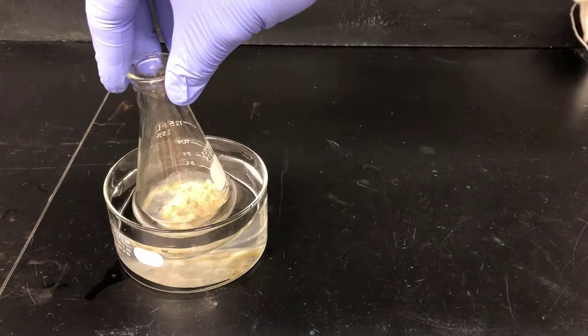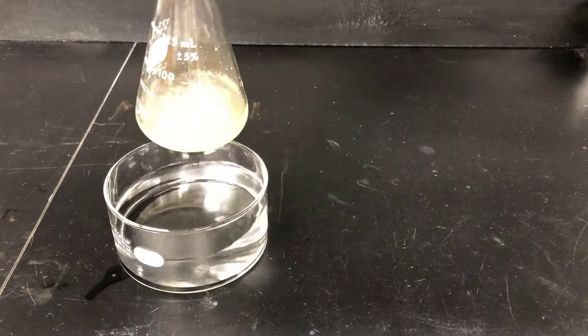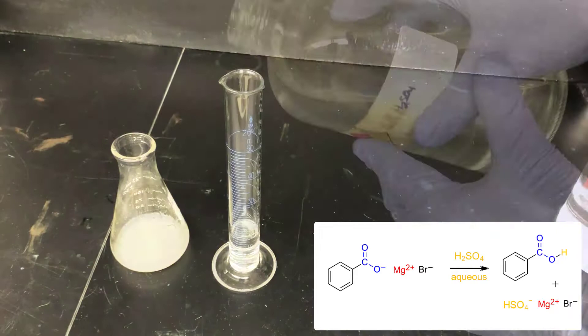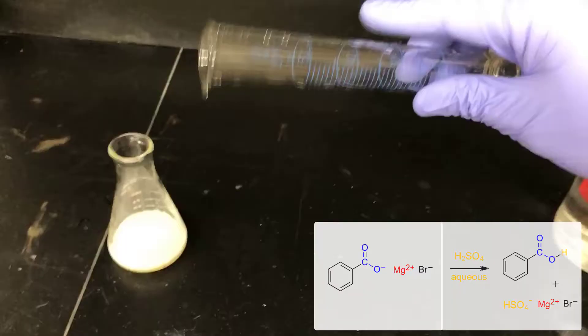Now there's a gooey tan blob at the bottom of the flask. That's the product at its current state. It's difficult to work with like this, so in the next step I'll add sulfuric acid, H2SO4, and water to protonate this carboxylate salt and make it neutral, which will allow me to work with it more easily. Here I'm adding 12 milliliters of 6-molar aqueous H2SO4 sulfuric acid in water.